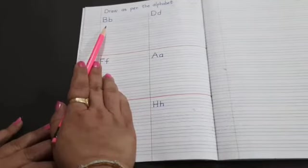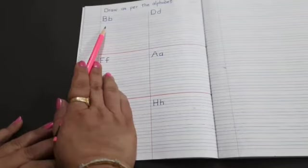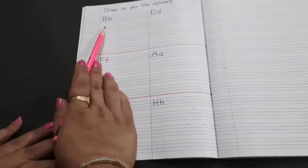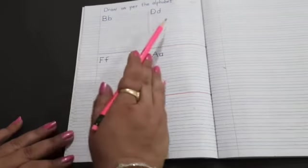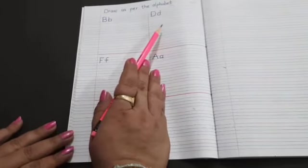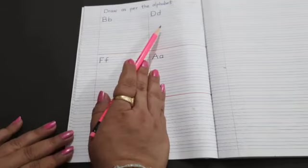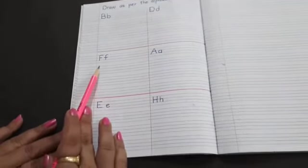The first alphabet is B, so you have to draw a picture as per the alphabet. So the first alphabet is B, capital B, small b. So what you will draw? You can draw a balloon or a ball. Second alphabet is D, capital D, small d. So what you will draw? You can draw a drum or a door. Which alphabet is this? This is capital F, small f. So what you will draw? You can draw a flower or a fish.